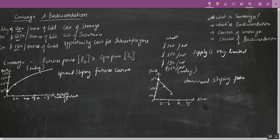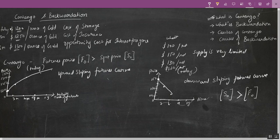This is a situation where the spot price for a commodity today is greater than the forward price or the futures price for the commodity today. So contango is a situation where the futures price is more than the spot price — you have an upward sloping futures curve. And backwardation is a situation where the spot price is greater than the forward price — you have a downward sloping futures curve. I hope you understood the concepts of contango and backwardation. In our next video we will see what is normal contango and normal backwardation. Thank you.